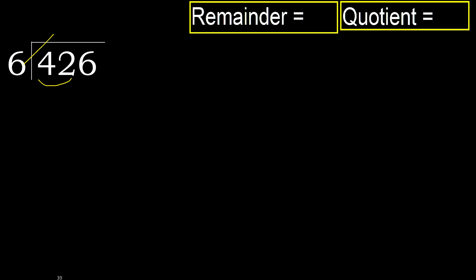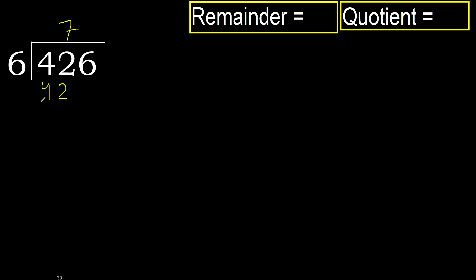6 multiplied by 8 is 48, which is greater. Multiplied by 7 gives 42, which is not greater. Subtract: 42 minus 42 equals 0.